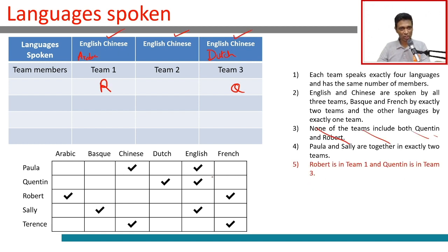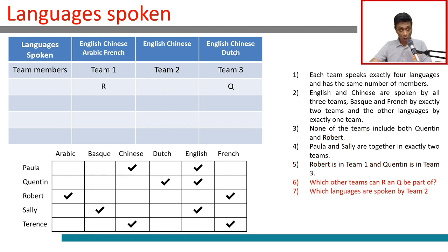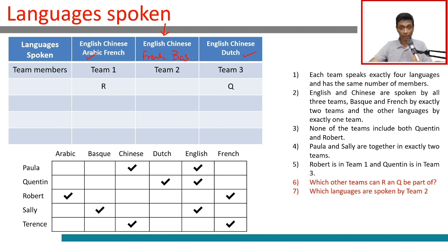Robert speaks Arabic and French, so team 1 has English, Chinese, Arabic, and French. Team 3 has English, Chinese, and Dutch. Arabic and Dutch have been accounted for — each appears in only one team. So for team 2, Arabic and Dutch cannot be spoken there, meaning team 2 must have English, Chinese, French, and Basque.